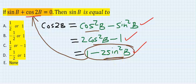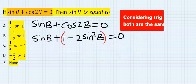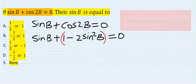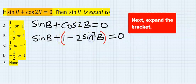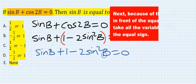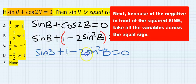Because I want to totally eliminate cos and have only sine in the equation. Now instead of cos 2B I now have this. Next I want the two sine squared B to be positive so I will take everything to the other side.